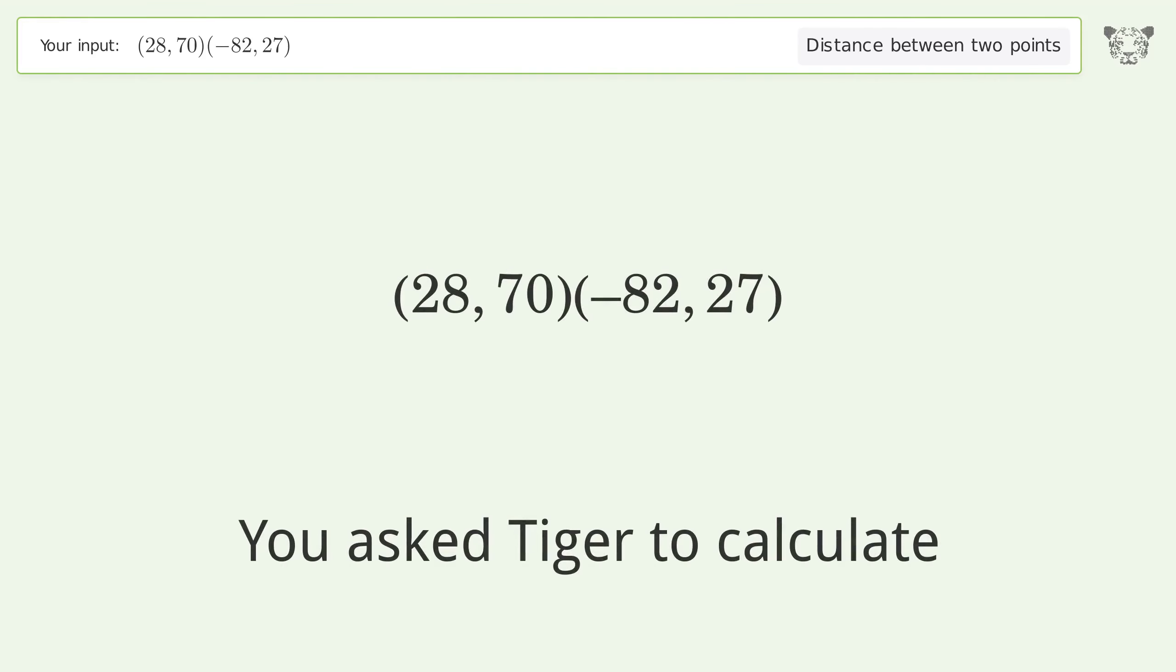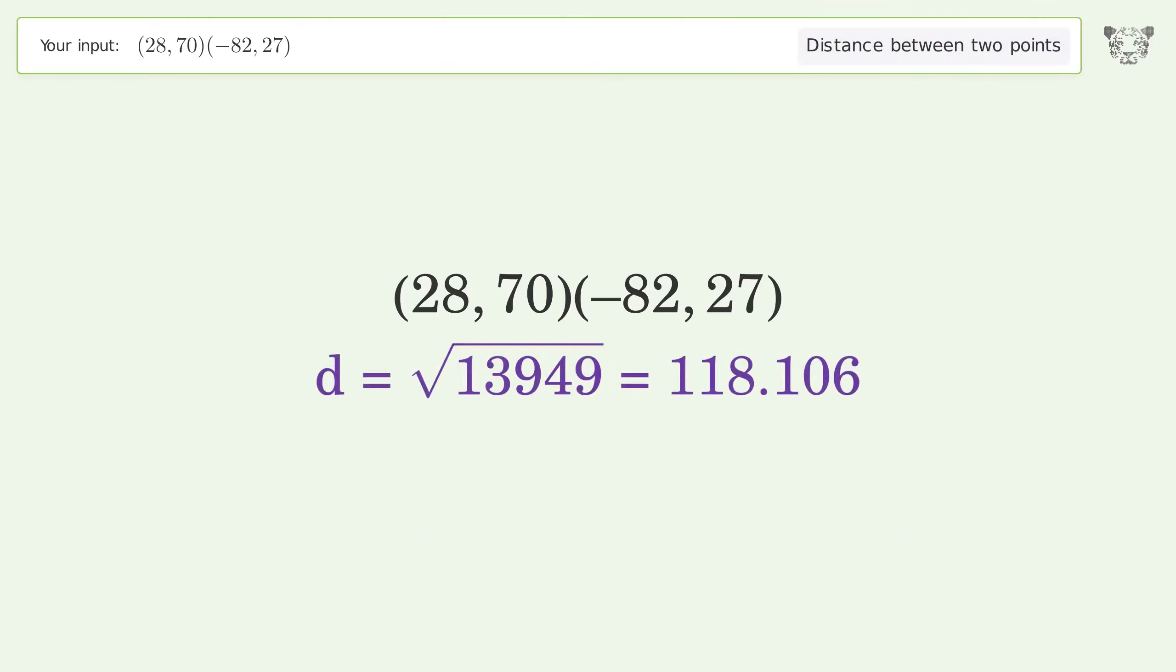You asked Tiger to calculate the distance between two points. The distance between the two points is the square root of 13949 or 118.106.